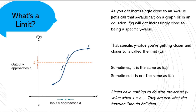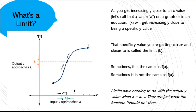So what's a limit? It's what a function should be at a certain point. Traditionally, we would say we assign a value to x — let's say x is a, and it could be any number. As you get closer and closer to that a value from either the left side or the right side, your function is getting closer and closer to that dotted line, which we're calling L, the limit. It's what you expect f(a) to be.